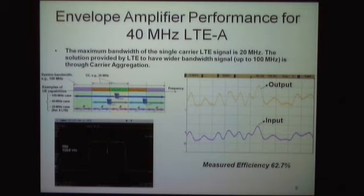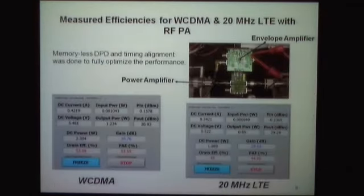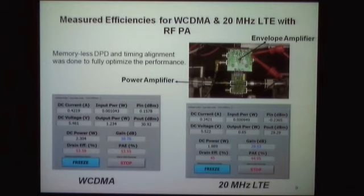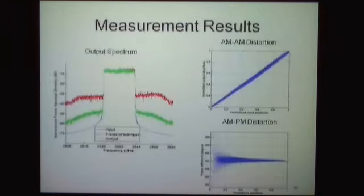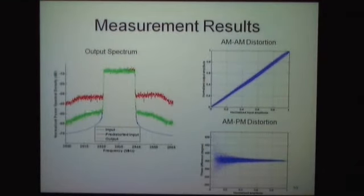Beyond the resistive load test, we tested our Envelope Amplifier IC with a real PA using a commercial GaAs RF power amplifier. With WCDMA, the measured PAE is 53.5%. For 20 MHz LTE, we achieved 45% PAE after applying memoryless DPD and performing timing alignment between the envelope and RF paths. The measured spectrum shows the pre-distorted input, along with AM-to-AM and AM-to-PM characteristics, which are quite symmetric, indicating very little memory effects and good linearity.